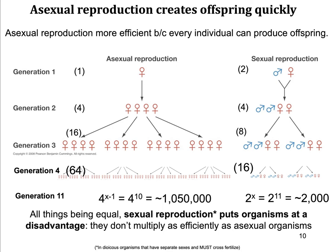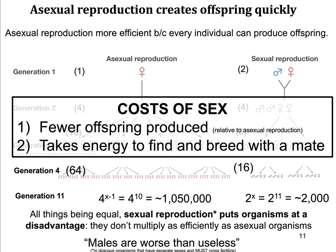Sexual reproduction actually puts organisms at a big disadvantage because they don't multiply as efficiently as asexual organisms do. When talking about dioecious organisms that must cross-fertilize, in general fewer offspring are produced relative to asexual reproduction. It also takes a lot of energy to find and breed with a mate, making it much more energetically expensive. So these are huge costs associated with sex.